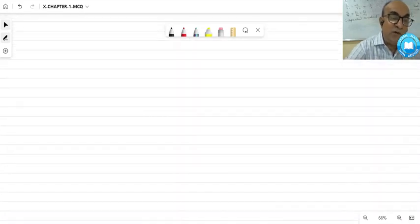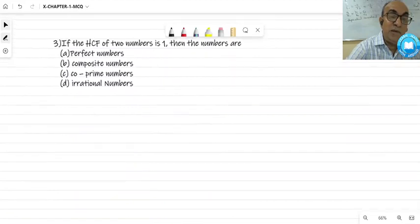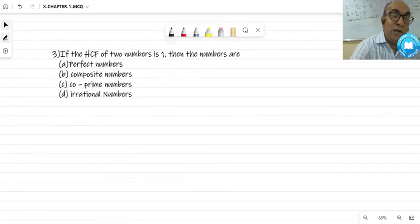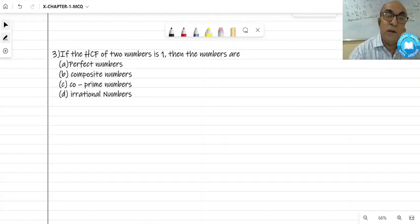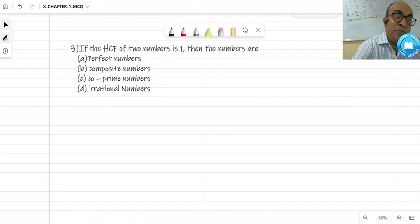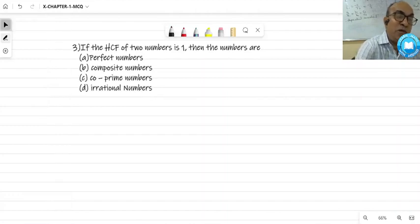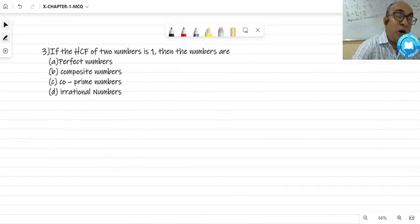Next question, question number 3. The HCF of 2 numbers is 1, then the numbers are. If HCF of any 2 numbers is 1, the numbers will be co-prime numbers. Here I will discuss the remaining numbers also. What is perfect number?